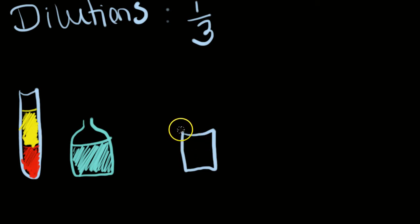Now you have determined that you're going to do a 1 to 3 dilution on this sample to get an accurate reading.